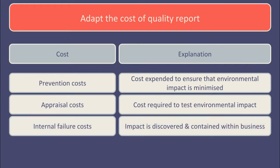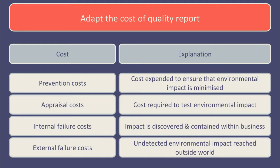Internal failure costs may occur if upon appraisal environmental impact is discovered but is contained within the business. For example, suppose an environmental analyst tests wastewater before it's pumped out into a local river and finds it's polluted. Work will need to be done to remedy this before discharging the waste, and this could also interrupt the production processes of the organization. External failure costs may occur if an undetected environmental impact reaches the outside world — for example suppose excessively polluted water is in fact flushed out into the river, killing the fish and other local wildlife. Apart from the moral implications of this, this will be damaging to the company's reputation and may well impact on them commercially as a result of the story being made public.